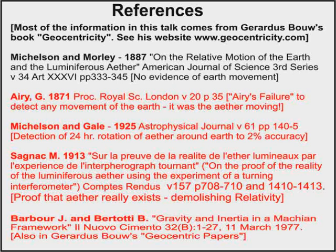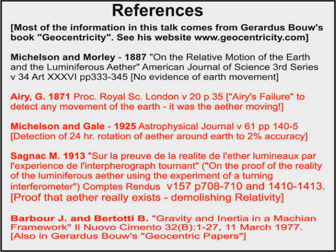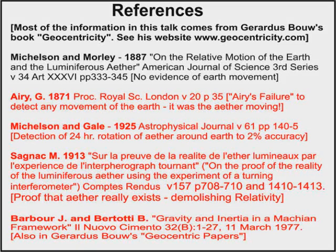In addition, the paper by Barbour and Bertotti showed mathematically that it was the mass of the stars that was producing the Coriolis effect, turned the pendulums, and produced the equatorial bulge on the Earth. I must point out that these four important articles are never mentioned in any university course for physicists or astronomers, because they present a completely different geocentric model of the way our universe works.